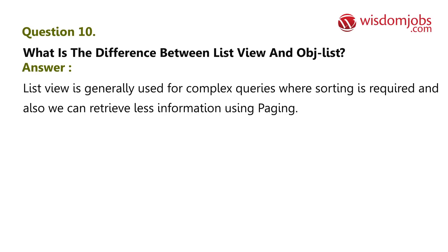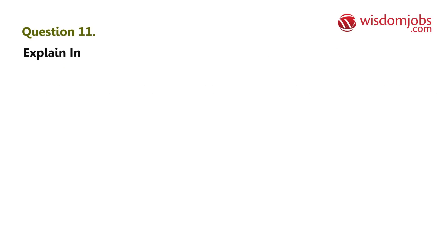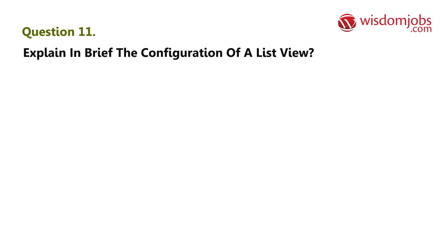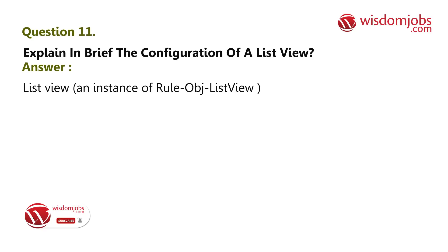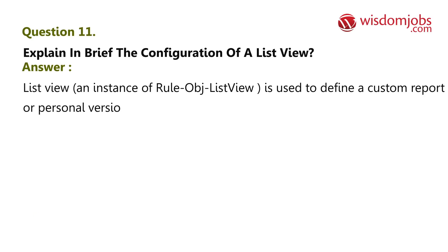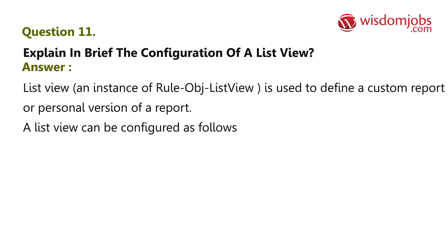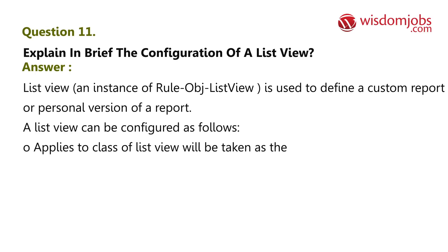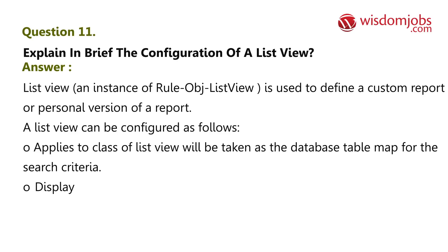Question 11: Explain in brief the configuration of a list view. Answer: A list view — an instance of rule-obj-list-view — is used to define a custom report or personal version of a report. A list view can be configured as follows: (1) The 'applies to' class of the list view will be taken as the database table map for the search criteria.